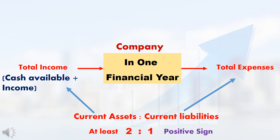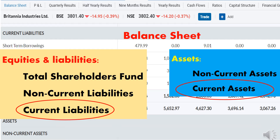Normally, for any company, the current assets to current liabilities ratio should be at least 2 is to 1, or greater than that. Then only it can be considered as a positive sign for that company. We can get this current liabilities and current assets data from the balance sheet.